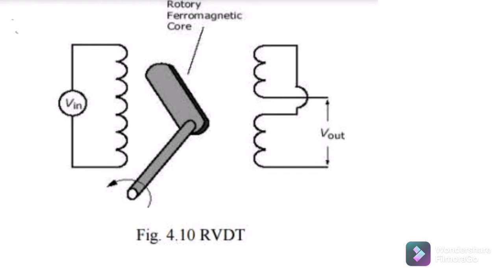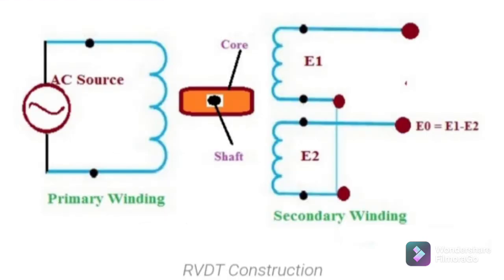Let's know construction and working of RVDT. RVDT transducer has two windings similar to the normal transformer, such as the primary winding and two secondary windings.